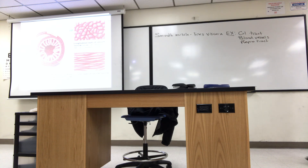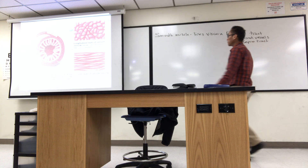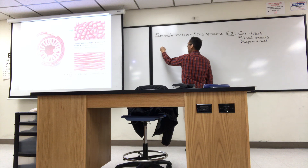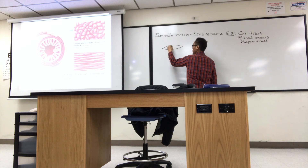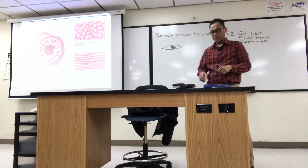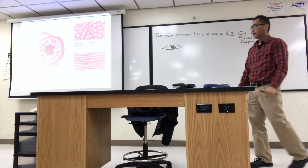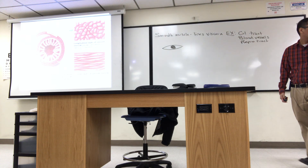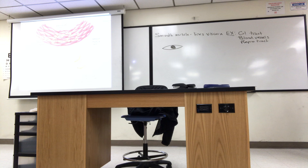What you see here, instead of an elongated muscle fiber, you just have this spindle-shaped cell. It has all the contractile proteins that skeletal muscle has, but you don't see any striations — that's why it's called smooth muscle. And instead of axon terminals, the autonomic nerve fibers create little varicosities that interact with the smooth muscle.